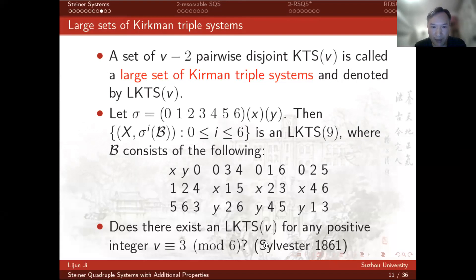Silvestre asked whether there is an LKTS(v) for any v equals 3 modulo 6. The progress of LKTS is very slow.